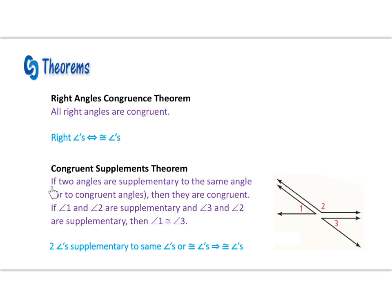Next we have our congruent supplements theorem. It states if two angles are supplementary to the same angle, or to congruent angles, then they are congruent. Looking at this diagram: if angle 1 and angle 2 are supplementary, and angle 3 and angle 2 are supplementary, then we conclude that angle 1 is congruent to angle 3, because they are supplementary to the same angle. Our implied statement: two angles supplementary to the same angles or congruent angles implies congruent angles.